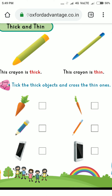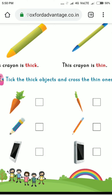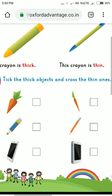Tick the thick object and cross the thin ones. You can see here two crayons are drawn — one crayon is thick and the other crayon is thin. You need to see which is thick and which is thin. If you want to identify the thick one and the thin one, tick or cross accordingly.